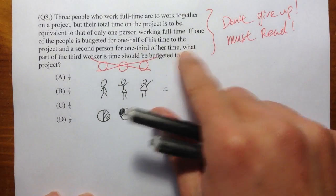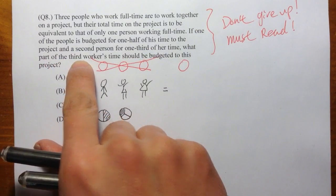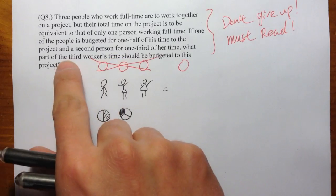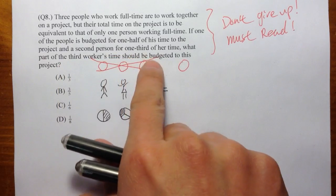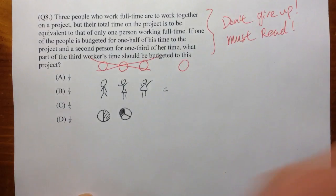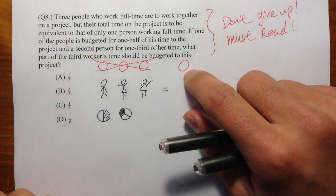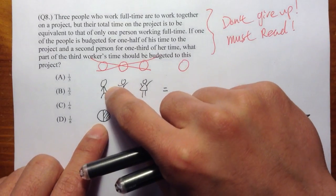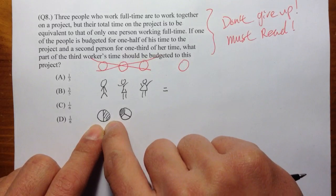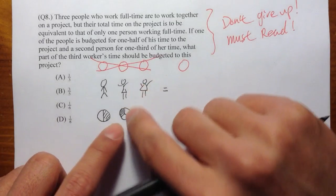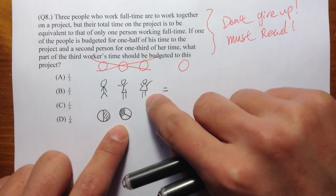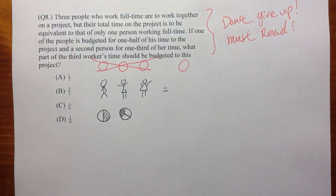And the question is, what part of the third worker's time should be budgeted to the project? So in another word, if you relate to the pizza story, this person already ate half of the pizza, this person ate a third. So how much more does this person get? That's the question.